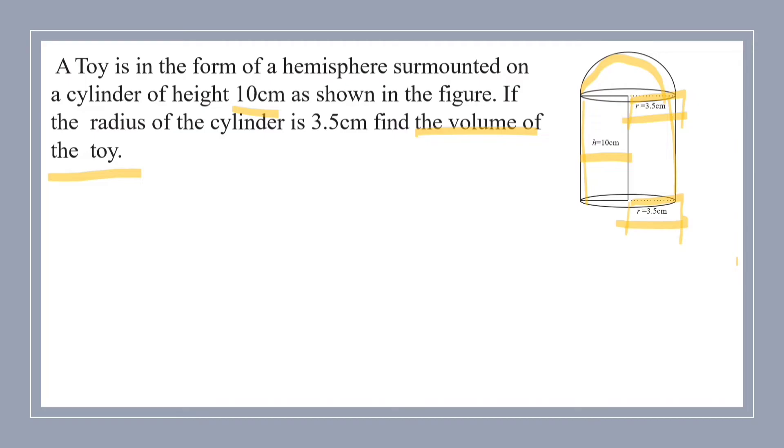Here, radius of the hemisphere is also 3.5. What has been given here? The height of the cylinder is 10 cm. Radius of both cylinder and hemisphere is 3.5 cm. We have to find the volume of the toy. How can we find it?